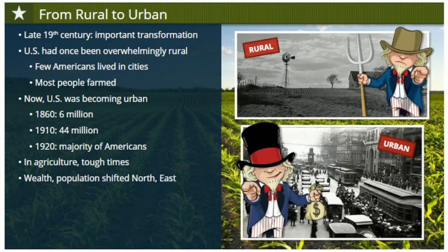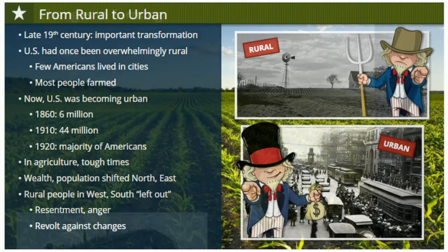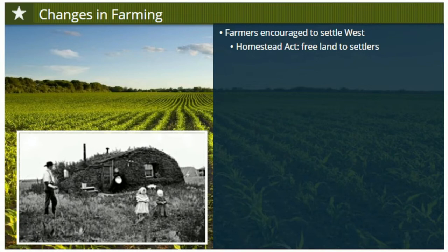As the wealth and population of the nation shifted more to the north and east, rural people, including many who lived in the West and South, began to feel left out of the changing modern America. Some reacted with resentment and anger, revolting against the changes they felt threatened their way of life. After the Civil War, Americans had been encouraged to settle and farm the West. The Homestead Act offered up to 160 acres of free Western land to any settlers who would live on it and farm it for a period of five years.